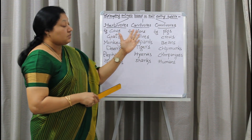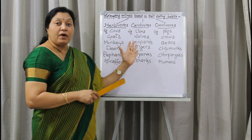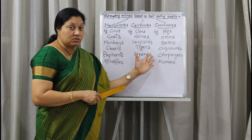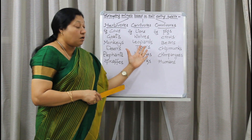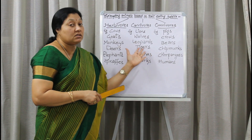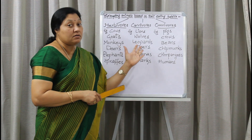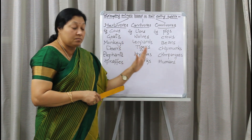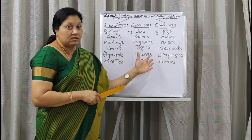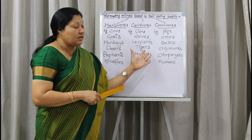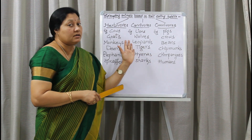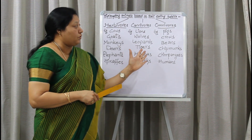Coming to the third group of animals — they are the omnivores. Omnivores are animals that depend on plants as well as other animals. They eat both plant food and animal food.